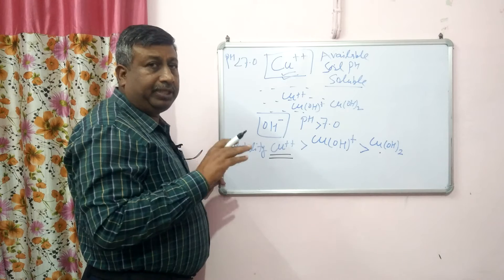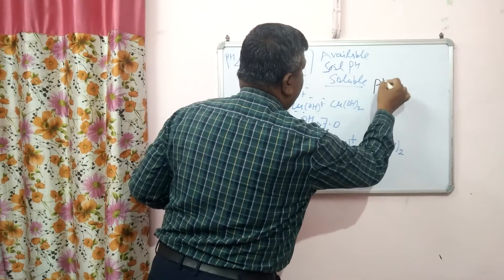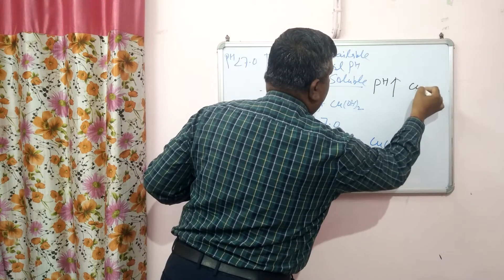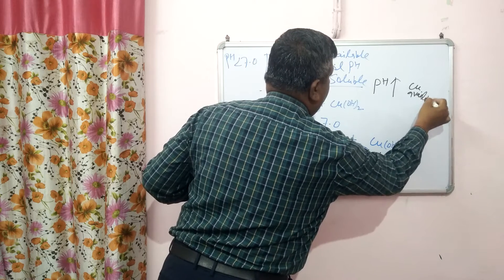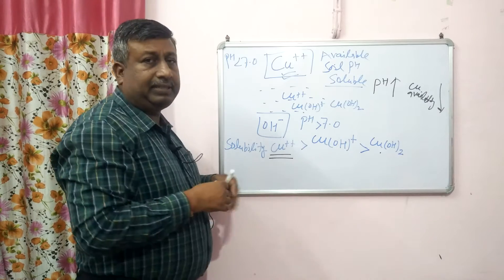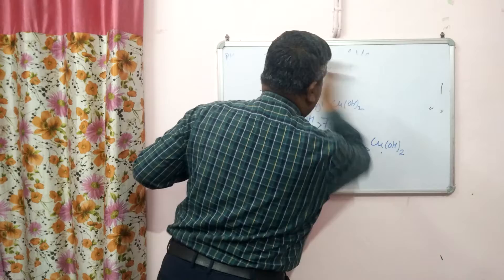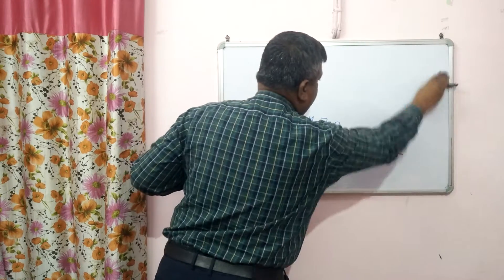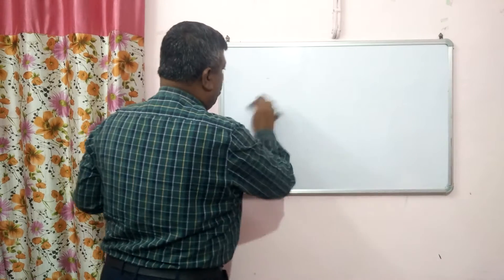This is the first reason that soil pH affects copper availability. At high pH — more than 7 — availability of copper is reduced. Another reason is that as pH is increased, copper is adsorbed on organic matter, on clay, on aluminium oxide, iron oxide, and manganese oxide, and this reduces copper availability.